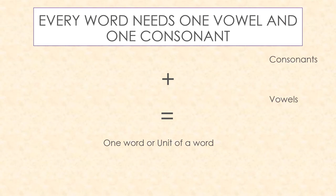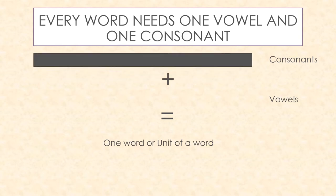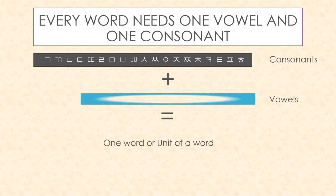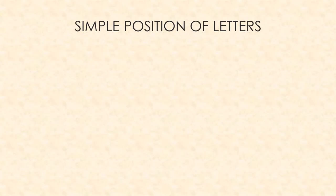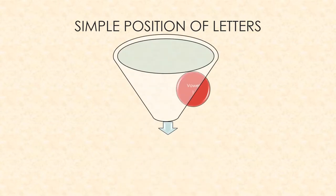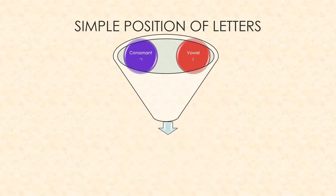The basics of a Korean word, or a unit of a word, is that it starts with a consonant followed by a vowel. So here we have a set of consonants, and you add a vowel to them like this, and then you have one word or a unit of a word. You start with a consonant, then add a vowel, put them together, and that simply makes a word.